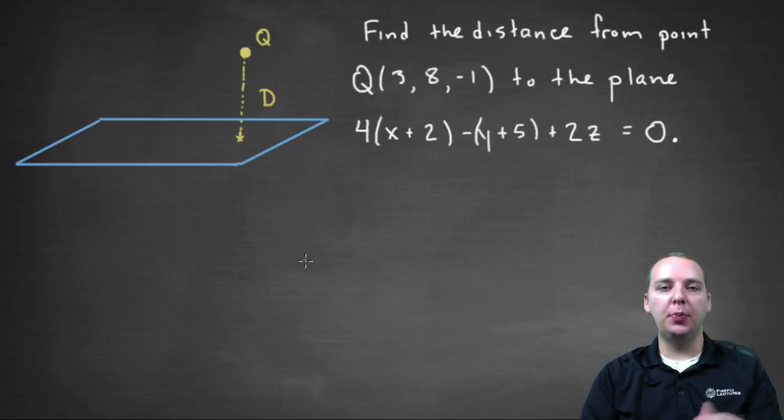In this exercise we're given a point Q, which is the point (3, 8, -1), and we're given the equation of a plane: 4(x+2) - (y+5) + 2z = 0. And we're asked to find the distance, the shortest distance, from this point Q to the plane.